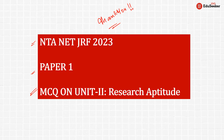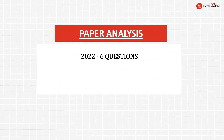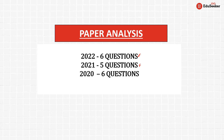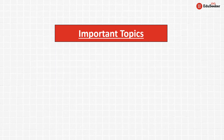Let's start with MCQs on Research Aptitude, Unit 2. Before starting, let's see how important this unit is through paper analysis. In 2022 May, the average across both shifts was six questions from Research Aptitude. In 2021 it was five questions, in 2020 it was six, and in 2019 it was again six questions. Important topics are those from which more questions appear repeatedly every year.